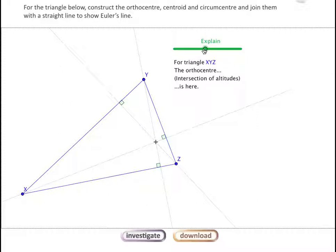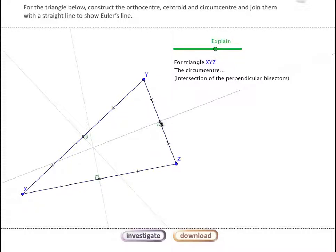The third and last one is the circumcenter. The circumcenter is formed by going back to the midpoint and putting a right angle line through the midpoint. It's a right angle to the side that the midpoint is on, and we do that for each of the sides.